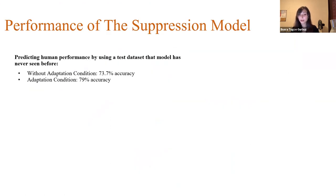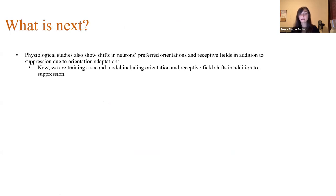So then we predict the human performance by using a test data set that model has never seen before. And the accuracies are like this. Without adaptation condition, model's accuracy was 73.7%. And adaptation condition, it was 79%, which is very good if we think that the chance level is 50%. And what is next is that physiological studies also show shifts in neurons preferred orientations and receptive fields in addition to suppression due to orientation adaptation. So now we are training a second model, including orientation and receptive field shifts in addition to the suppression.